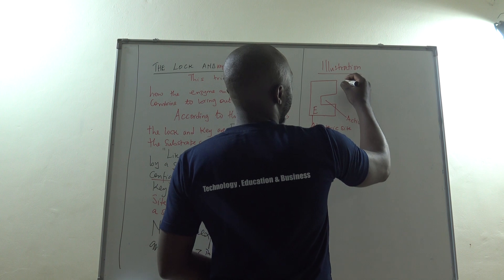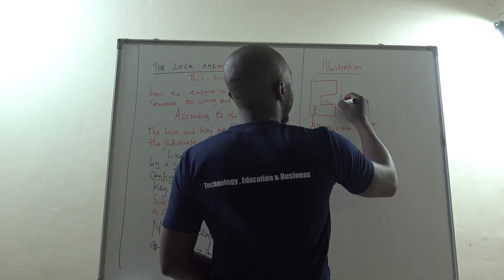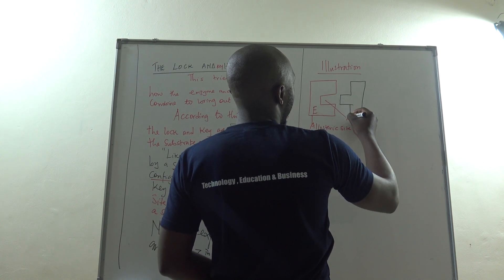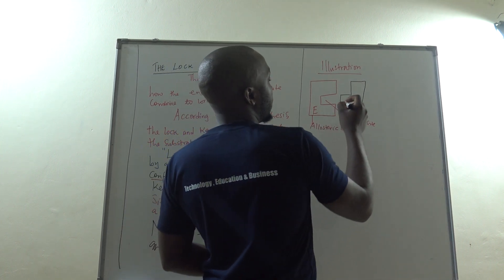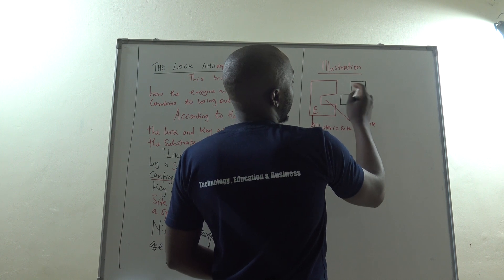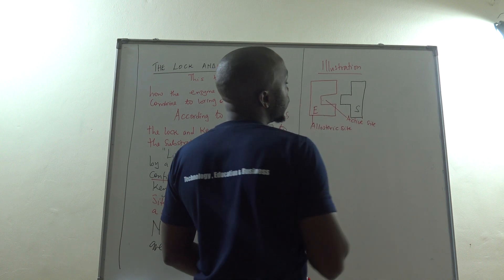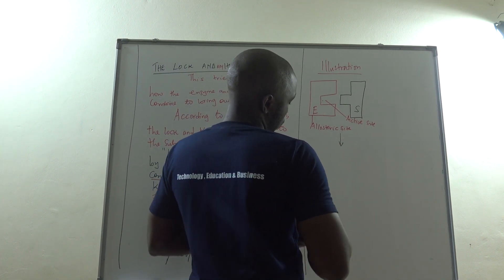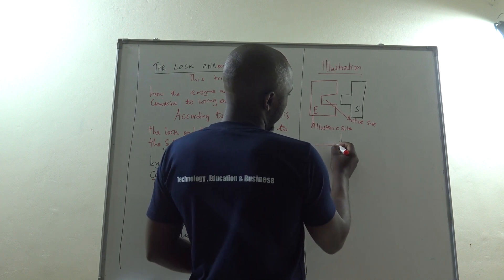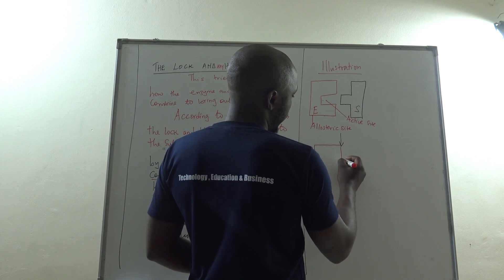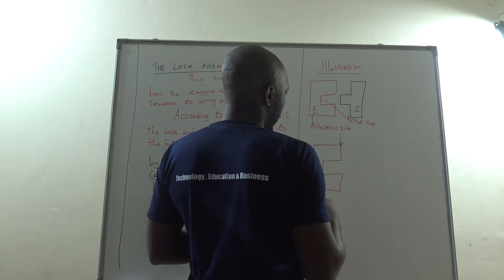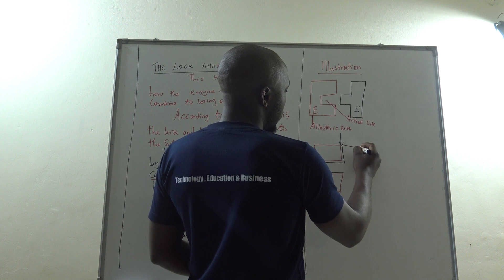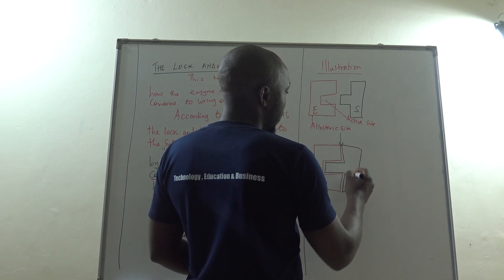The substrate will have a configuration that can fit into the active site of the enzyme to come up with something like this. So we shall come up with a structure - the enzyme and the substrate, in their mode of action, they form partial bonds.